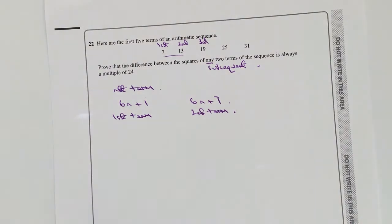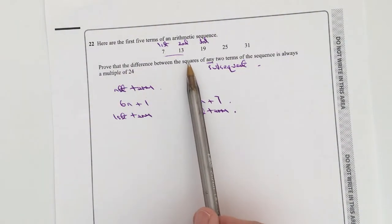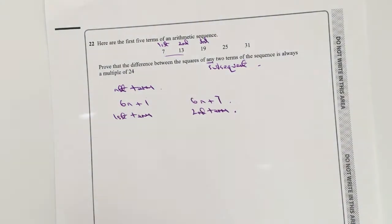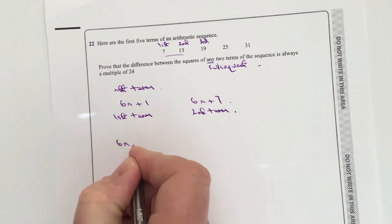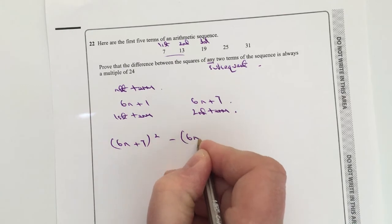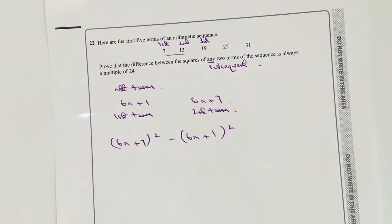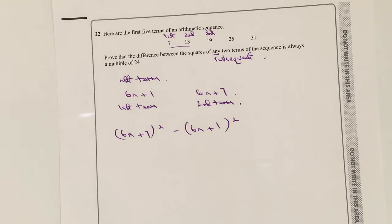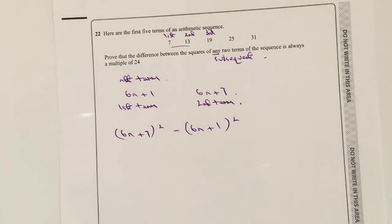Okay, so I can say it says prove that the difference between the squares. So what I'm going to do is 6n plus 7 squared minus 6n plus 1 squared. Okay, now if we work that all out, we should be able to then find that 24 is a factor of this particular equation.